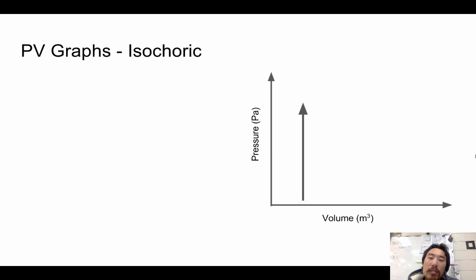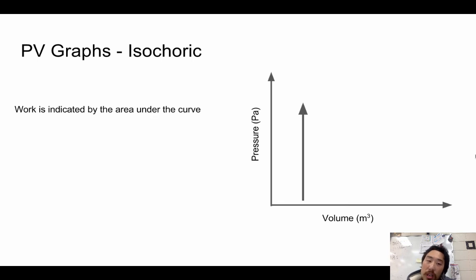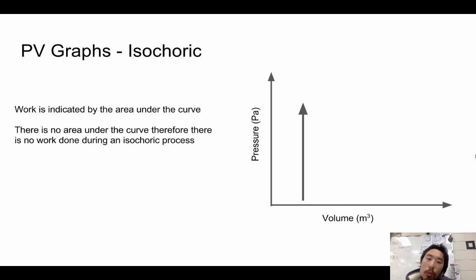Next, we have the isochoric PV graph. Isochoric means the same volume — the volume doesn't change. Notice there's no shaded area: work is indicated by the area under the curve, and because the curve is vertical, there is no area underneath it. Therefore, no work is done during an isochoric process — we just increase the pressure without increasing the volume.